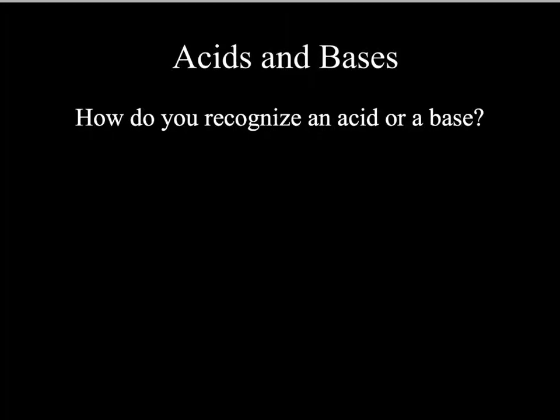The last compounds we're going to talk about naming and writing formulas for are acids. But the first thing I want to talk about is how to recognize an acid and a base. Base is pretty easy because it's just going to include the polyatomic ion hydroxide, OH-. So whenever you see a hydroxide ion, you're going to have a base.